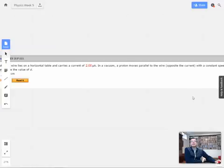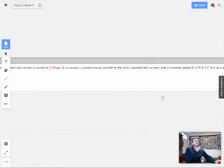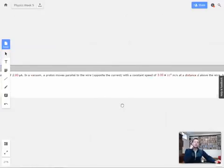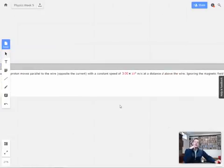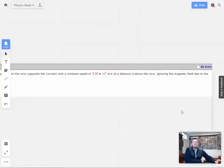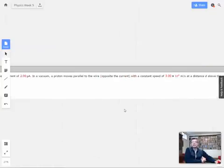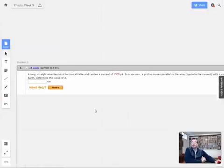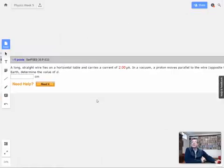and carries a current of 2 microamps. In a vacuum, a proton moves parallel to the wire, opposite the current, with a constant speed of 3 times 10 to the 4th meters per second, at a distance d above the wire. Ignoring the magnetic field due to Earth, determine the value of d.